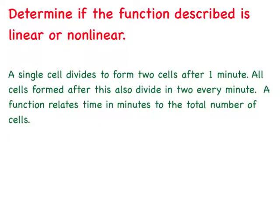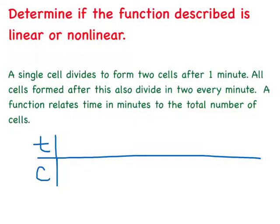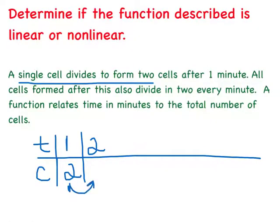Now we need to determine if the function described is linear or nonlinear. It says a single cell divides to form two cells after one minute. All cells formed after this also divide in two every minute. A function relates time in minutes to the total number of cells. So we can make a table of the values. We can say that we have the time and the number of cells. After one minute, we have a single cell that divides in two, so that's two. Then in two minutes, these two cells will divide in half and we'll have four.